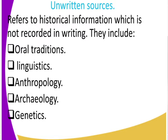The examples of unwritten sources of history and government include: one, oral tradition; two, linguistic; three, anthropology; four, archaeology; and lastly, genetics. We will be looking at each and every one of these examples as we move along.